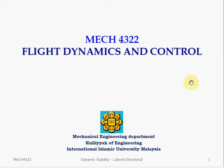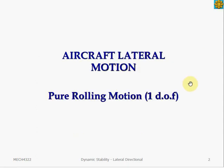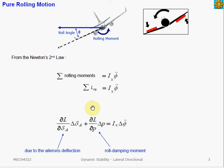In this lecture, we will discuss aircraft lateral directional dynamic stability. Let's start by looking at the simplest case of a 1 degree of freedom pure rolling motion. Pure rolling motion without yawing or side slipping can be obtained in a wind tunnel model where the aircraft is free to roll in the x-axis only. To analyze this motion, we start by writing the equation of motion using Newton's second law.